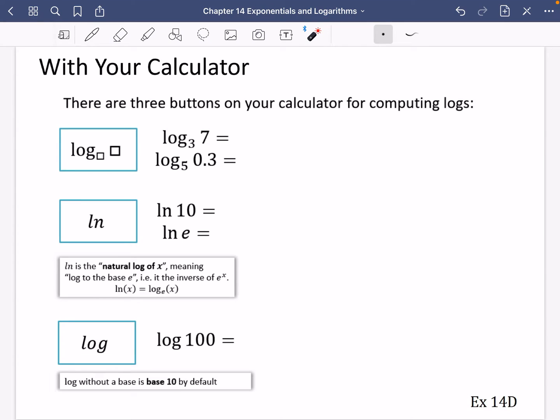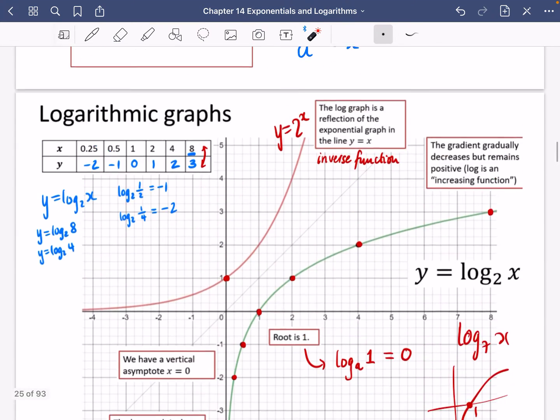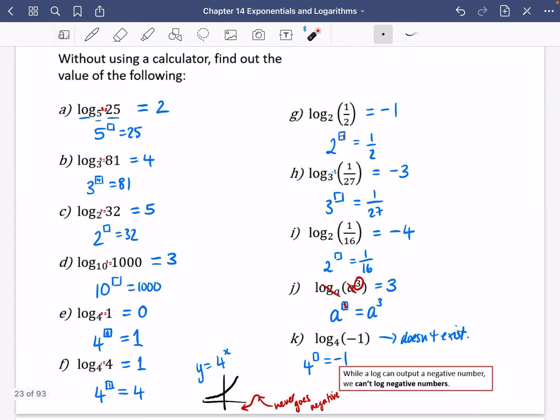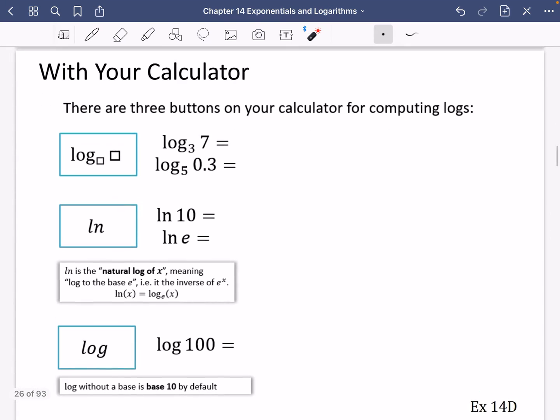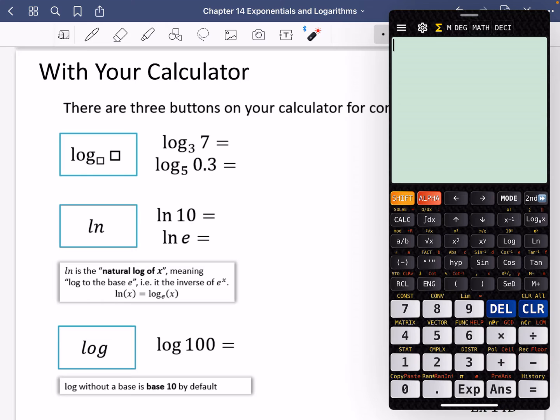Okay, so before we go on with exercise 14D, I wanted to talk about how you can do these things with your calculators, because so far, all of our answers have pretty much been nice numbers: 2, 4, 5, 3, 0, 1, minus 1, minus 3, minus 4. They've all been integers, really. So we want to see what these actually look like on the calculator. Now, there are three buttons on your calculator for computing logs.